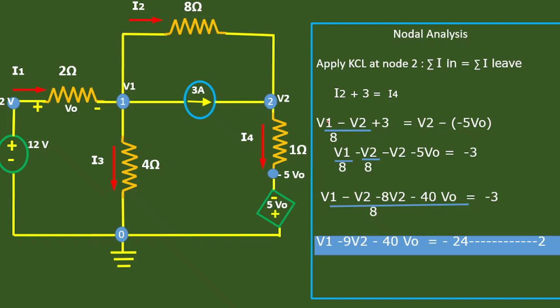Bringing terms to the left-hand side, we write this as V1 over 8 minus V2 over 8 minus V2 minus 5V0 equal to minus 3. Taking the common denominator gives V1 minus V2 minus 8V2 minus 40V0 equal to minus 3. So the equation becomes V1 minus 9V2 minus 40V0 equal to minus 24. This is our second equation.